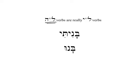Lamed-he verbs are verbs where the third root letter in the dictionary form is a he. But under certain circumstances, we can see that they're actually lamed-yod verbs. Here, we use the word banah, from bet, noon, he, to build.